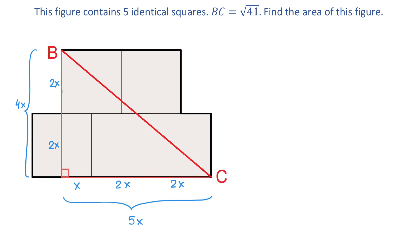So, then we will write the following equation: 5X squared plus 4X squared equals square root of 41 squared. Then, on the left side, 5X squared is 25X squared and 4X squared is 16X squared.